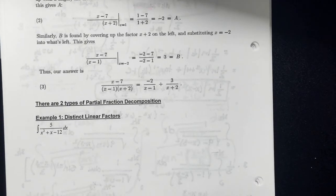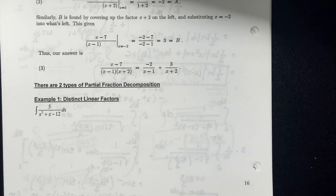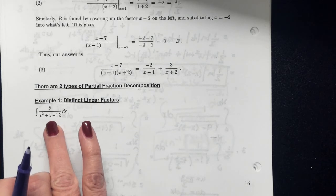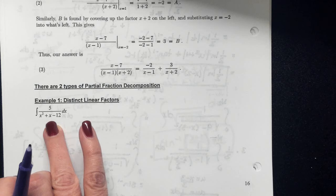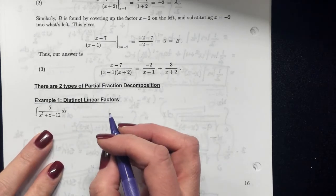Let's take a look at example 1. We're going to use integration now. On your test, I'm not going to tell you which method — you have to be able to recognize these integrals and know which method to apply. We always check for u-substitution first. Obviously a u-sub is not going to work on this denominator, and this is a factorable denominator that's not set up for an inverse trig, so this is where you do partial fraction decomposition.